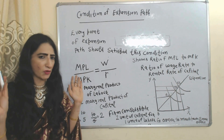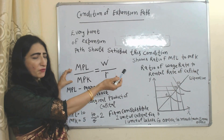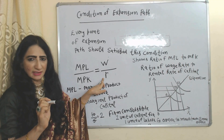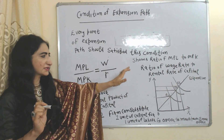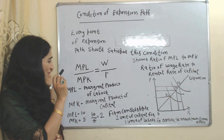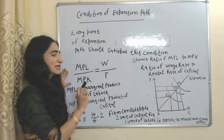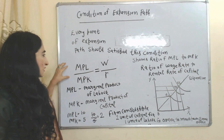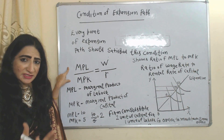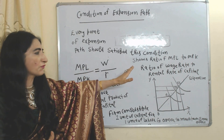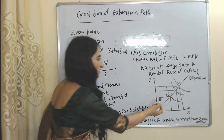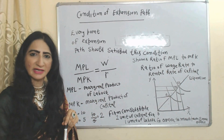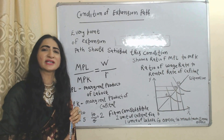This part mainly shows the ratio of marginal product of labor to marginal product of capital. W is the wage rate and R is the rental rate of capital. Every point of the expansion path should satisfy the condition that the ratio of MPL to MPK equals the ratio of the wage rate to the rental rate of capital. So all points on the expansion path must satisfy this condition. That is all about expansion path — thank you so much for watching.